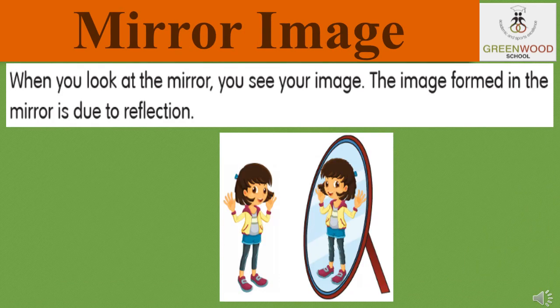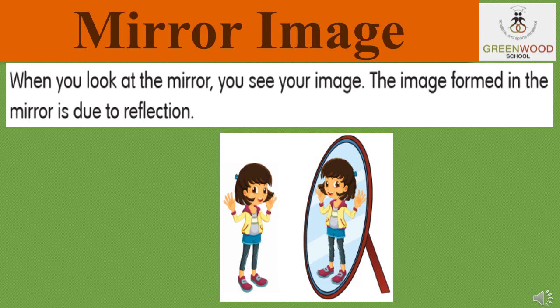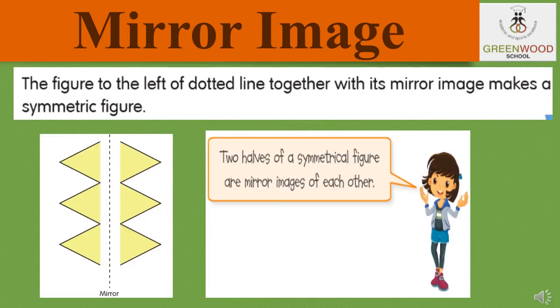Next topic is mirror image. When you look at the mirror, you see your image. The image formed in the mirror is due to reflection, as shown in the picture below. Now look at another image. The figure to the left of the dotted line together with its mirror image makes a symmetric figure. Two halves of a symmetrical figure are mirror images of each other.